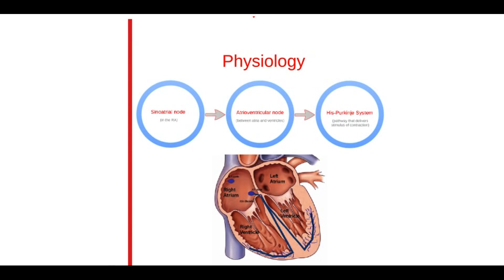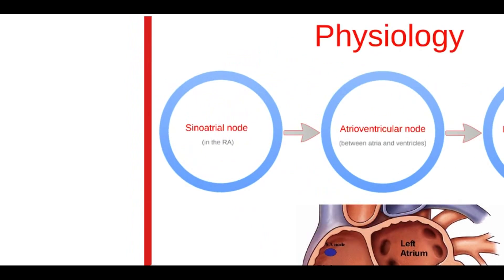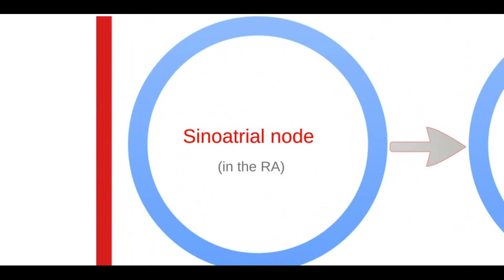Now we'll talk about the electrical pathways of the heart. Use the picture as a reference if you need to. The sinoatrial node, or the SA node, in the right atrium creates the strong and organized rhythm of electrical activity for the rest of the cardiac cells to follow. It's the intrinsic pacemaker of the heart.